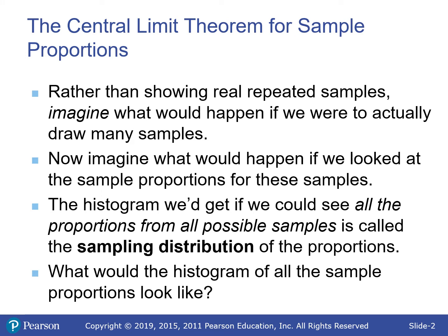For the central limit theorem for sample proportions — rather than actually taking repeated samples, imagine what would happen if we did. We're not going to take every group of 10 students from the high school. If there are 1,400 people and we're taking groups of 10, that gives us about 7.7 × 10²⁴ possible samples — not feasible.